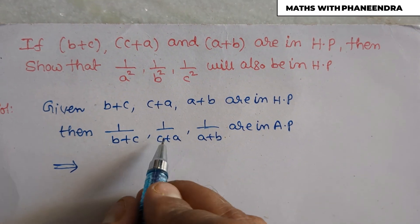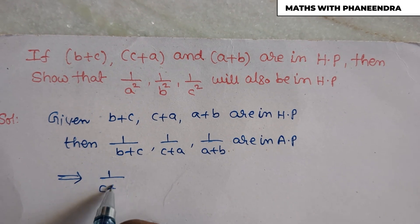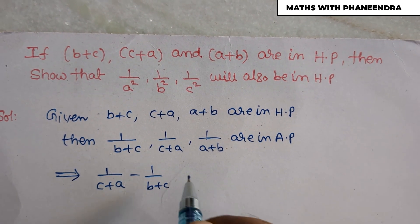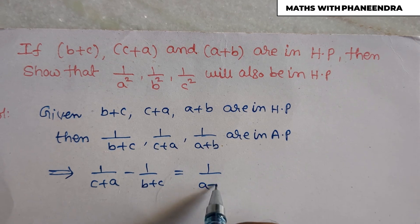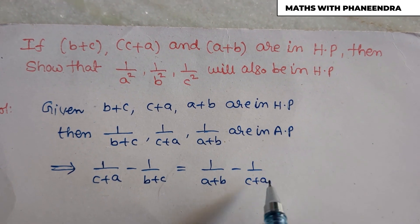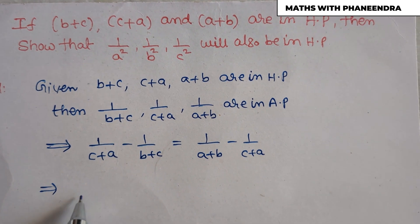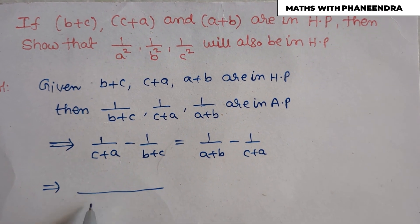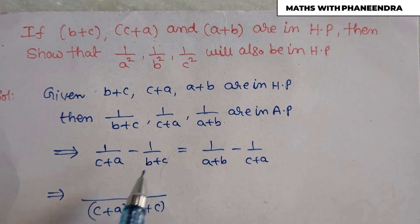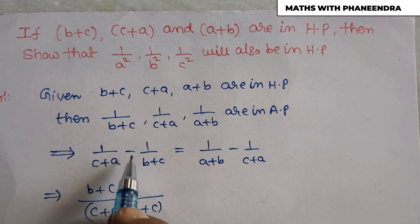The common differences must be equal, so: 1/(c+a) − 1/(b+c) = 1/(a+b) − 1/(c+a). Now take the LCM and simplify. Cross-multiplying on the left side gives (c+a)(b+c) in the denominator.